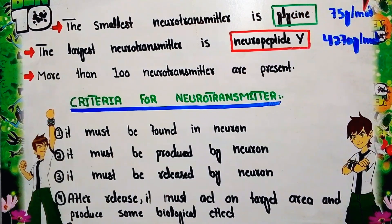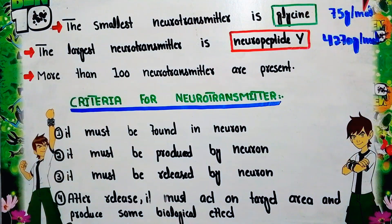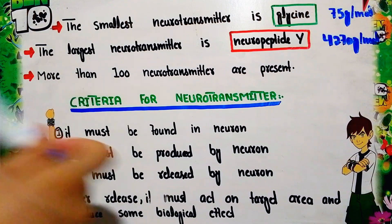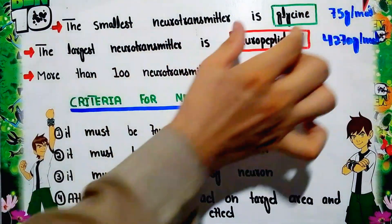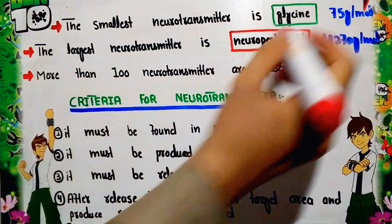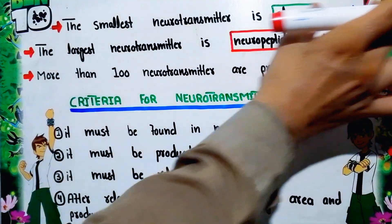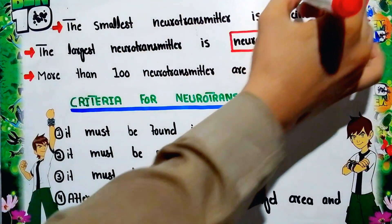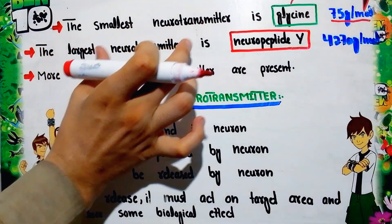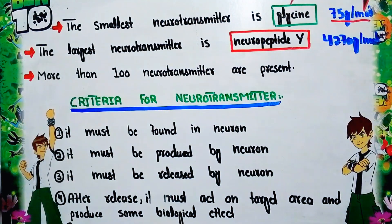An important point for general knowledge and competitive exams: neurotransmitters are classified as large or small on the basis of their molecular weight. The smallest neurotransmitter is glycine, with a molecular weight of about 75 grams per mole. Glycine is also considered the smallest amino acid.